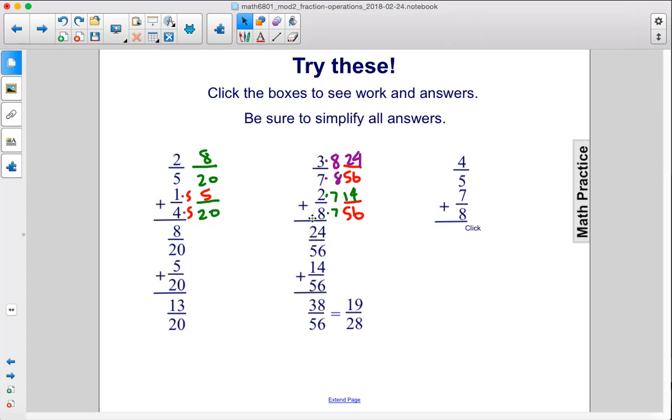Then, to continue on, you have 24/56 + 14/56. You just add 24 and 14 together to get 38. And then you can actually simplify this fraction by making it 19/28. We just divided each of these by 2.